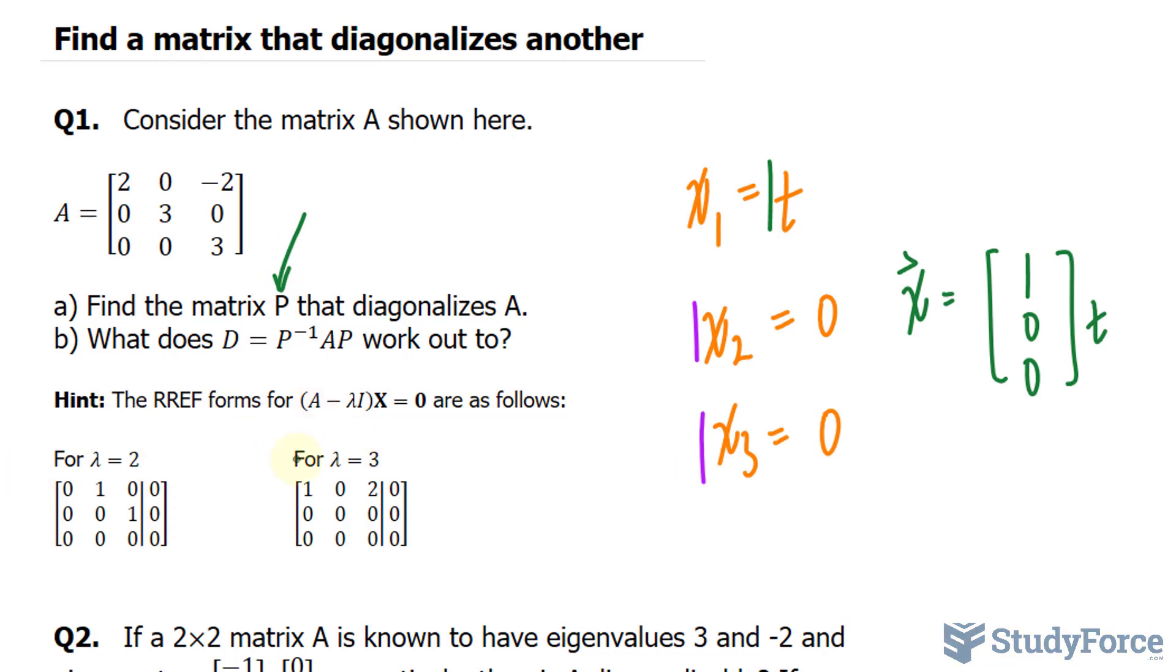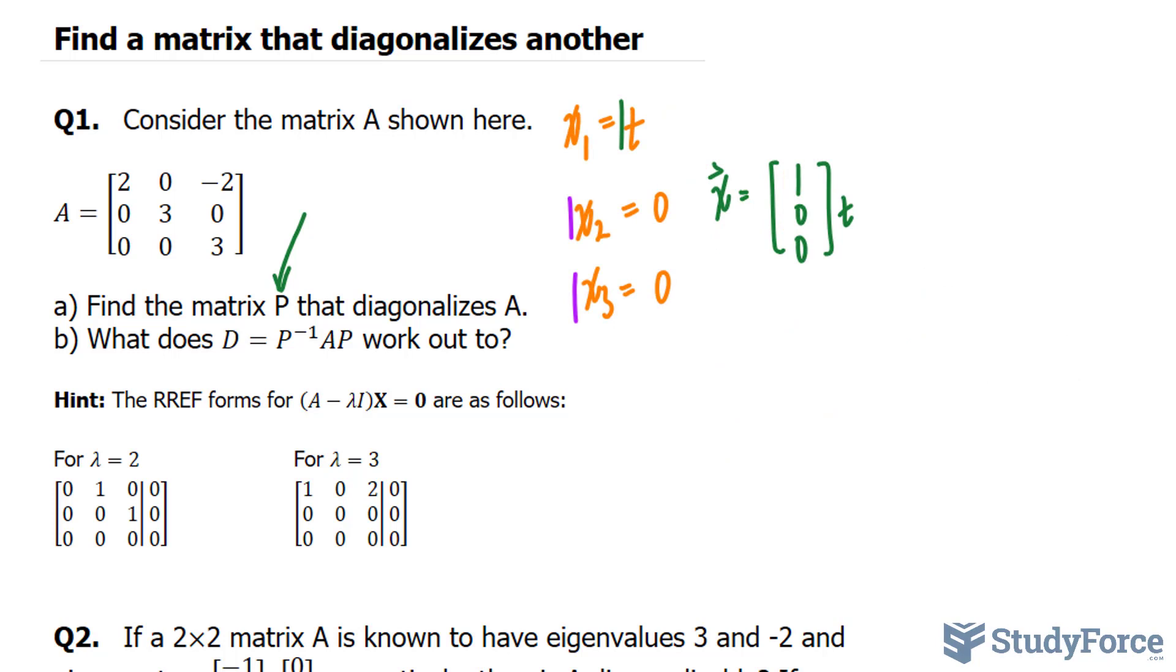So that's when the eigenvalue is 2. What about when the eigenvalue is 3? Now, if you have no knowledge of eigenvalues and eigenvectors, obviously this is going to be hard to understand, so make sure that you look back at our eigenvalue and eigenvector videos. So now looking at this matrix, we have two columns without a leading 1. We're going to have two parameters.